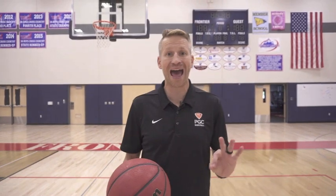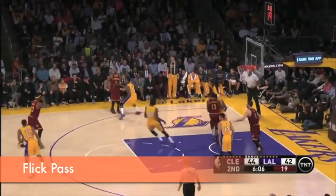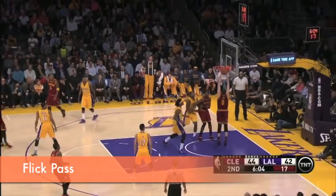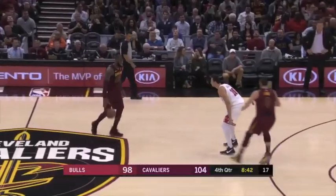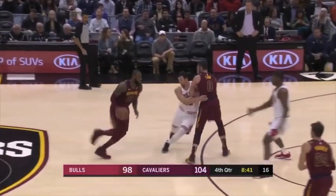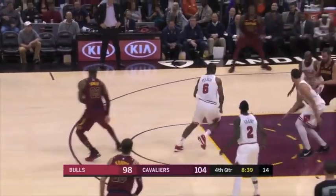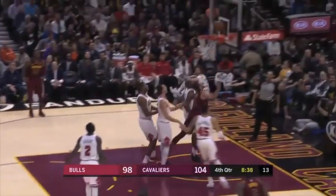So let's go ahead and talk about the five different passes. The first one that you must have is a flick pass. A flick pass is one that LeBron James uses constantly to pass off the shoulder, immediately off the dribble, without giving away his passing angle.